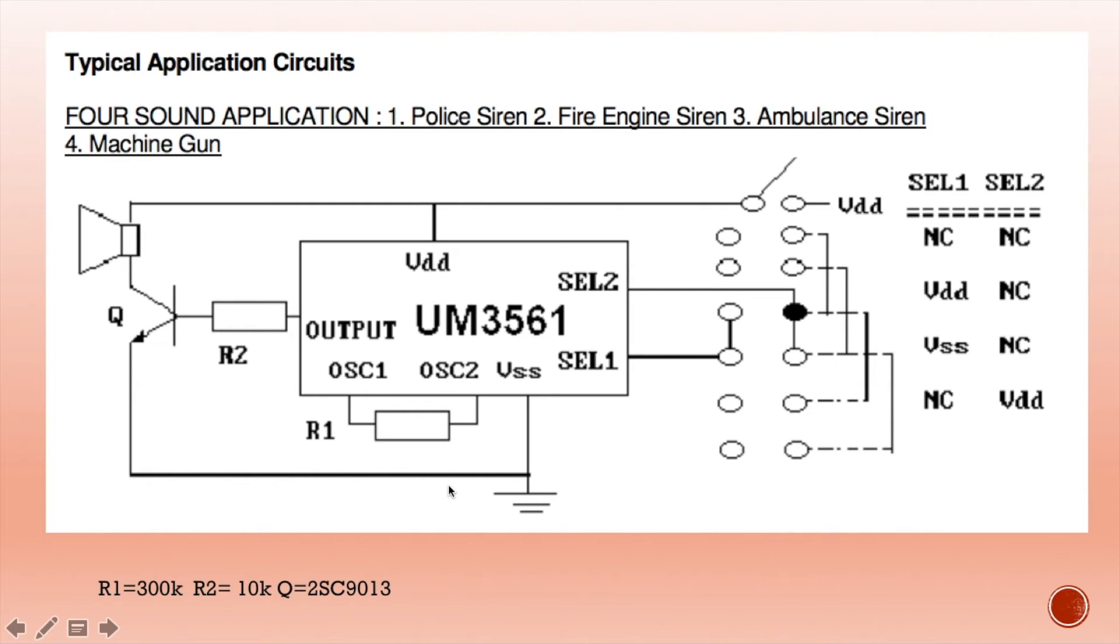VSS is connected to the ground terminal of your battery. Q is the NPN transistor, which can be BC547 or BC548. These are easily available in the market at very low price. In India, you can purchase this whole setup within 100 rupees. In any other country, you can purchase from eBay or various Chinese sites. The UM3561 costs one dollar maximum, and this whole setup can be made within two to three dollars.